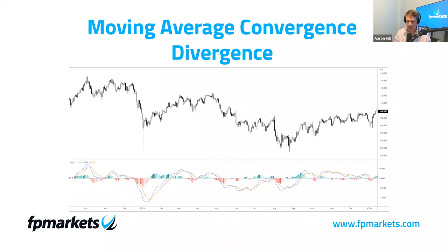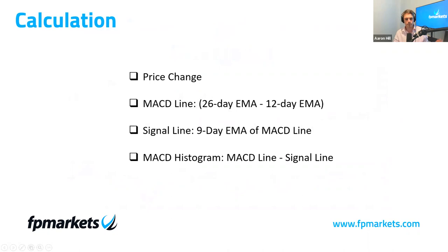Just to be clear, the histogram was not developed by Gerald Appel — it was actually invented by Thomas Asprey, and I think he developed it in 1986. So this was an addition to the MACD. I would encourage you to understand the calculation as it really enhances your understanding of the indicator itself.